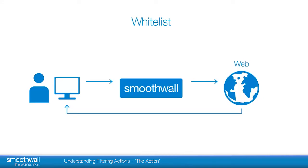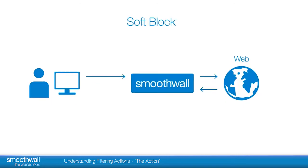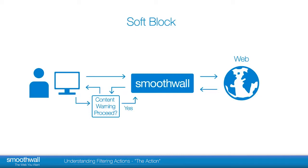Whitelist can be used for a trusted supplier such as a company provider's website. Soft block: the block page is shown as a warning — the user should be mindful of the content, but the user is able to choose if they would like to stop at this point or click through and proceed to the site.